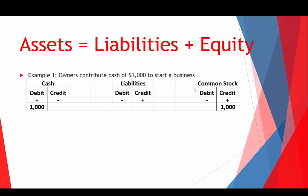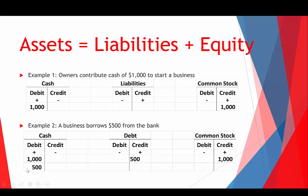In the T-accounts, on the left side under assets, cash is $1,000; on the right side, liabilities and equity are $1,000. Example two: a business borrows $500 from the bank. Cash is going to go up by $500, and liabilities are also going to increase by $500 because we have to pay the bank back. Now our total cash is $1,500, we have debt under liabilities of $500, and common stock of $1,000 from the first transaction. On the left: $1,500. On the right: $1,500. Everything's in balance.